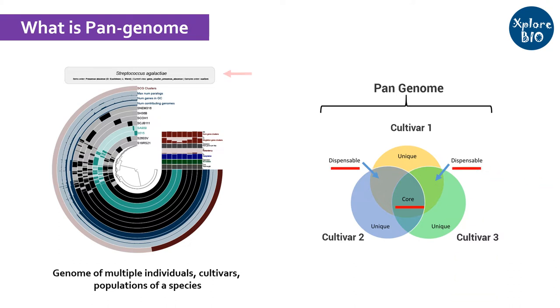Initially the Pan Genome of a bacterial species was sequenced. Later on, Pan Genomes of several eukaryotes including plants and humans have been sequenced.